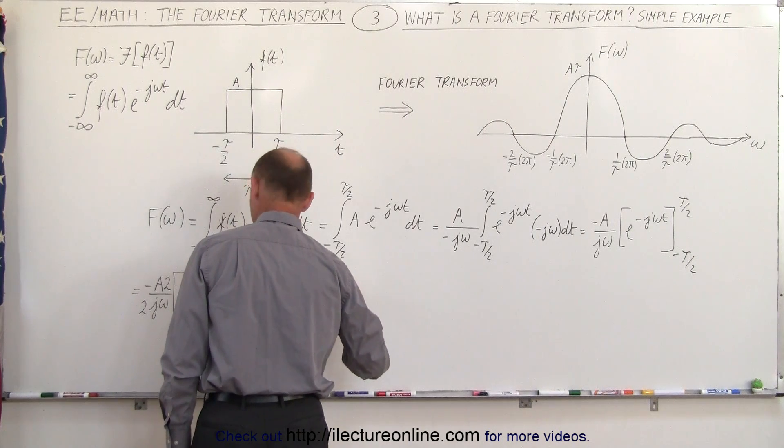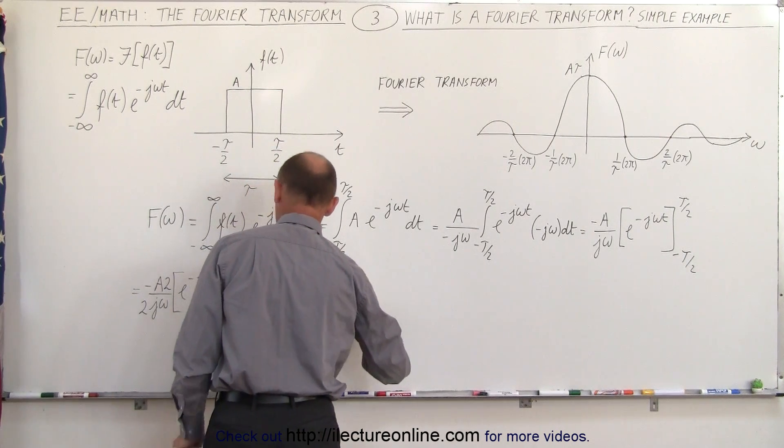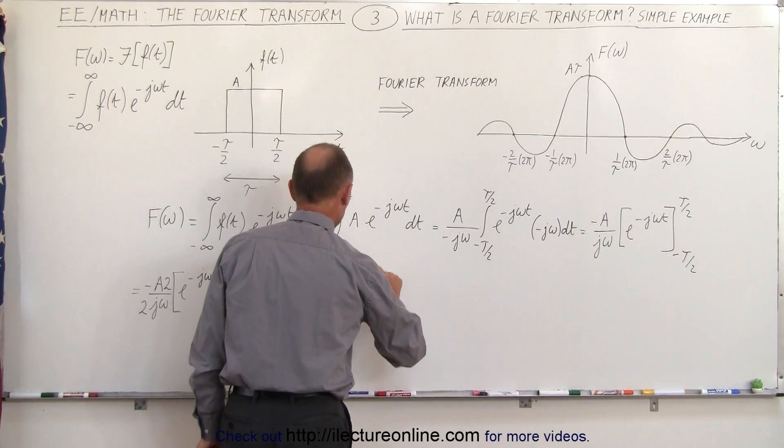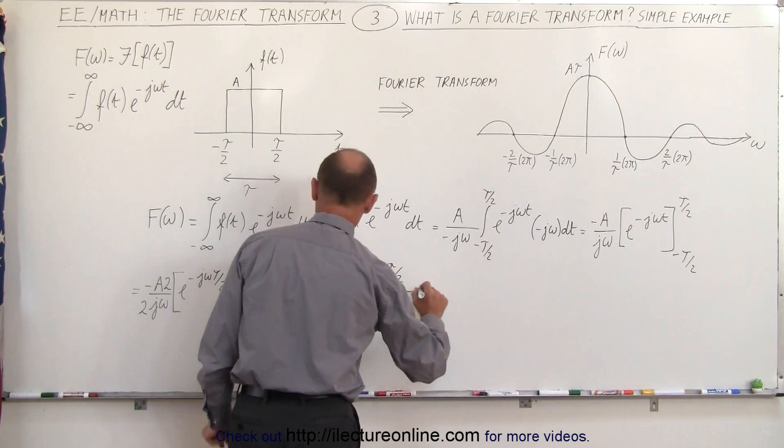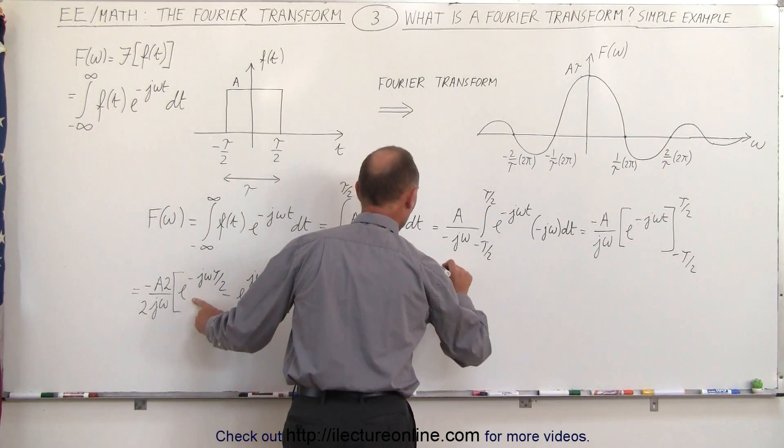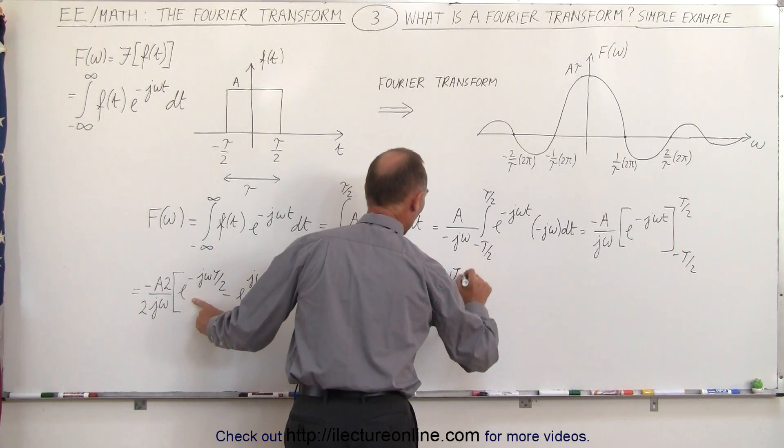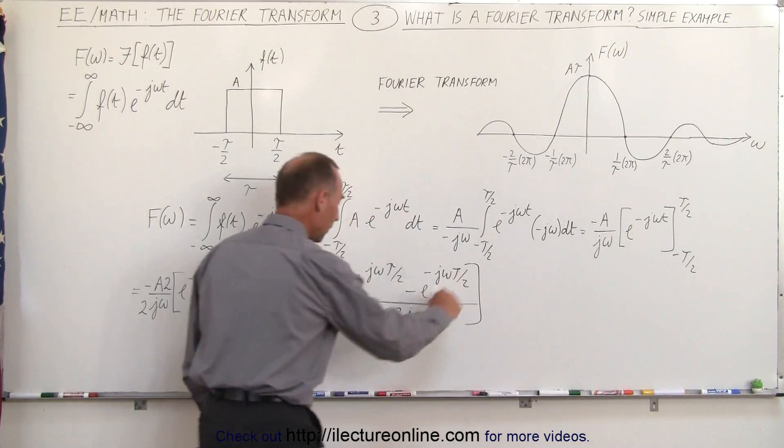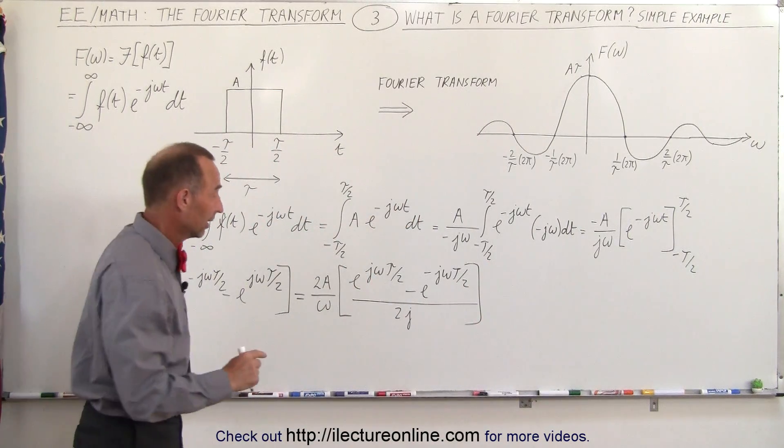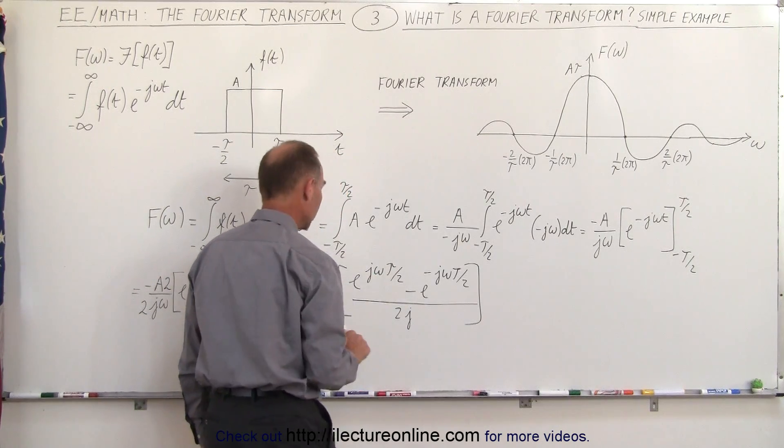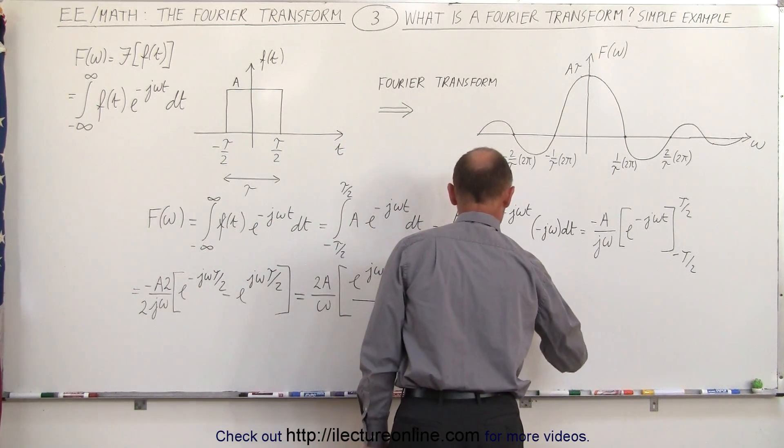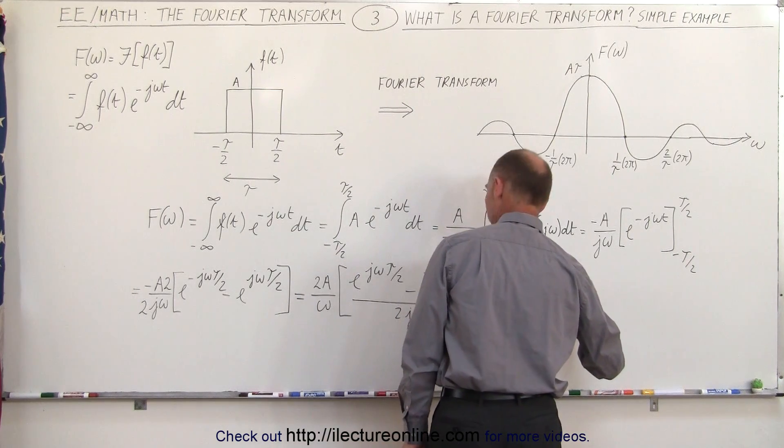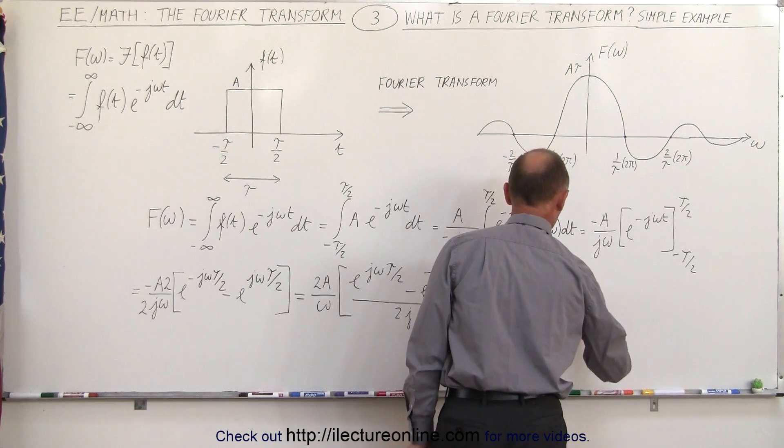So this is equal to positive 2A divided by omega times, we write this term first and then this term last, e to the j omega tau over 2 minus this term e to the minus j omega tau over 2 all divided by, and we take the 2j over here. Now we know that this is the complex form of the sine function. Of course this would be the sine of omega tau over 2. So this becomes 2A divided by omega times the sine of omega tau over 2.